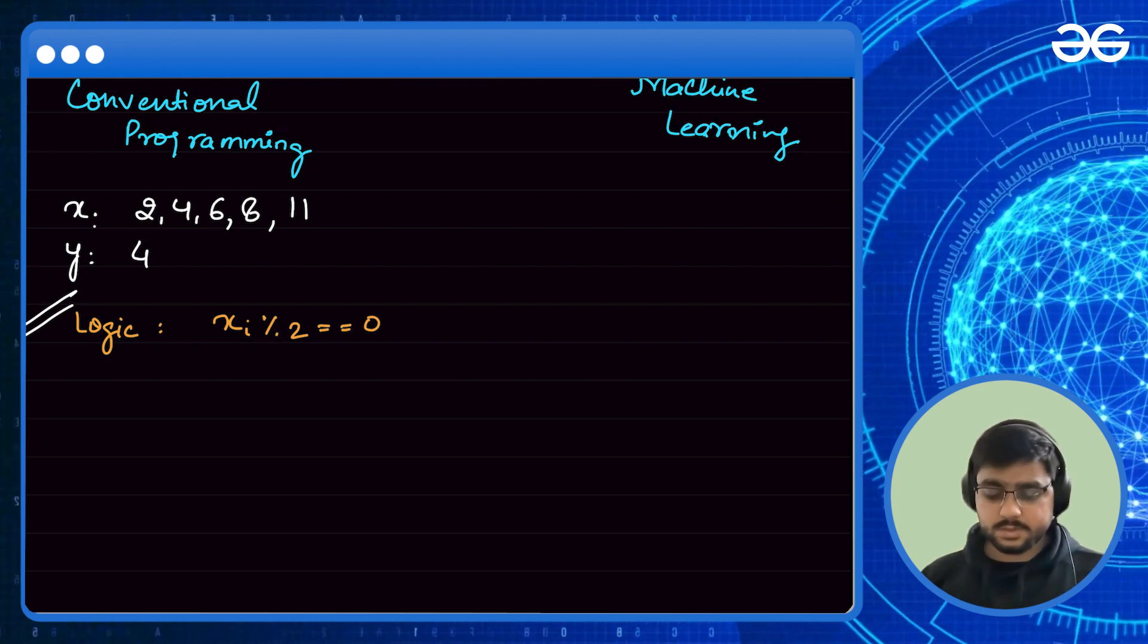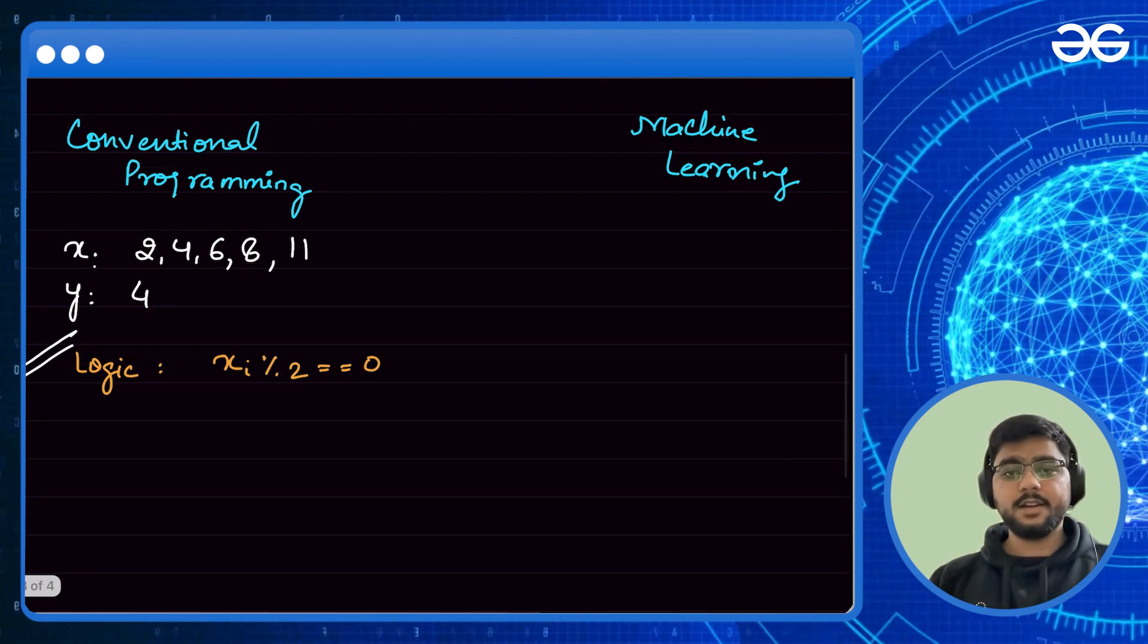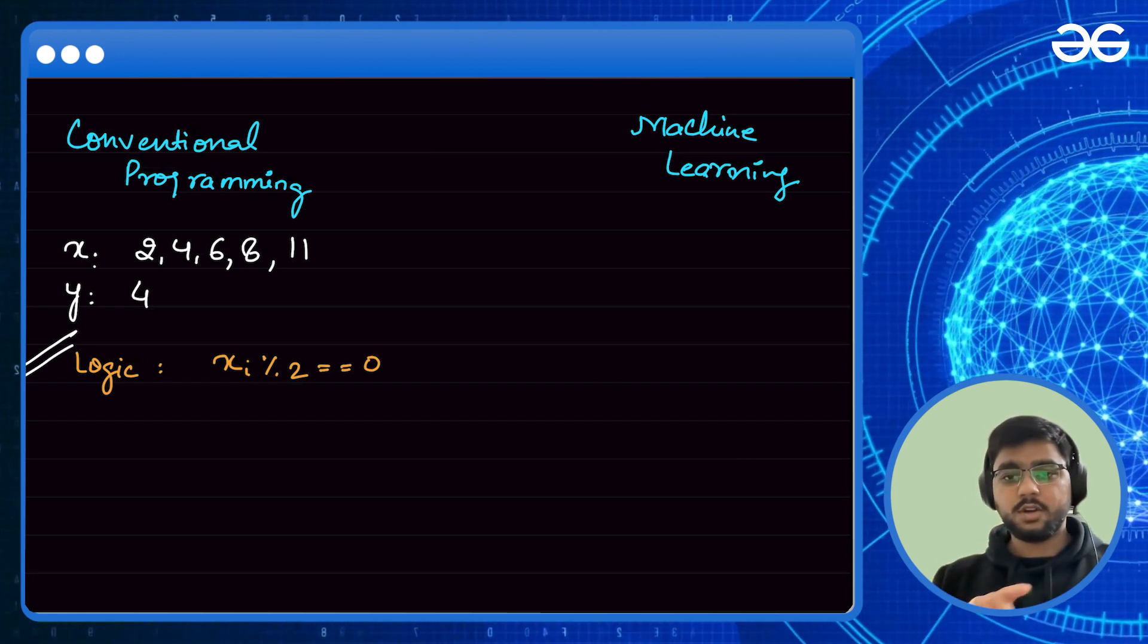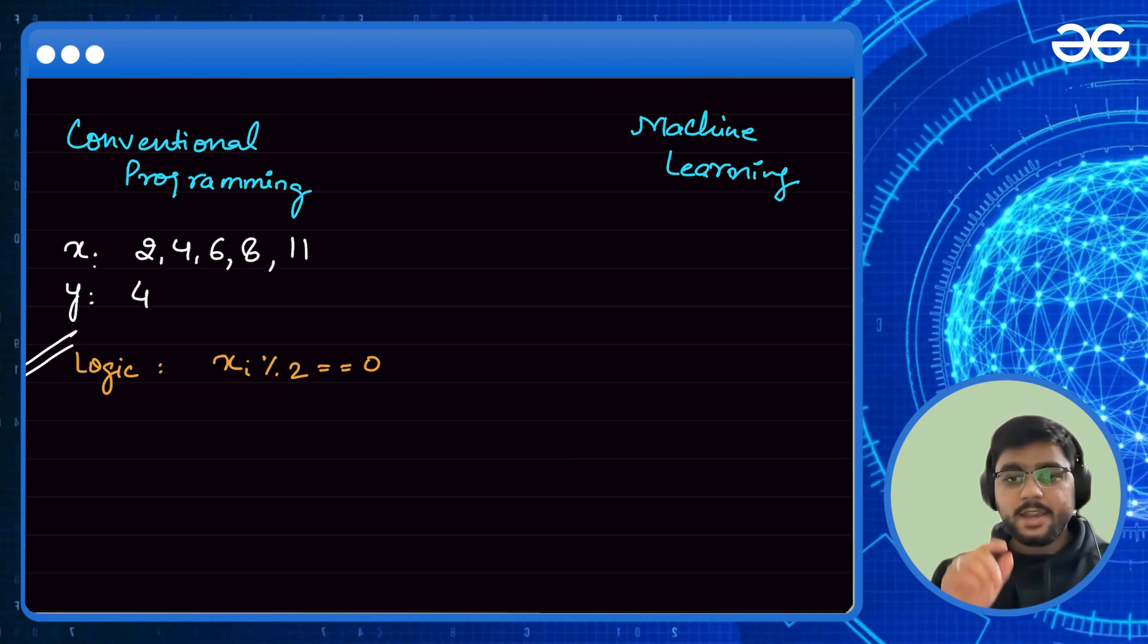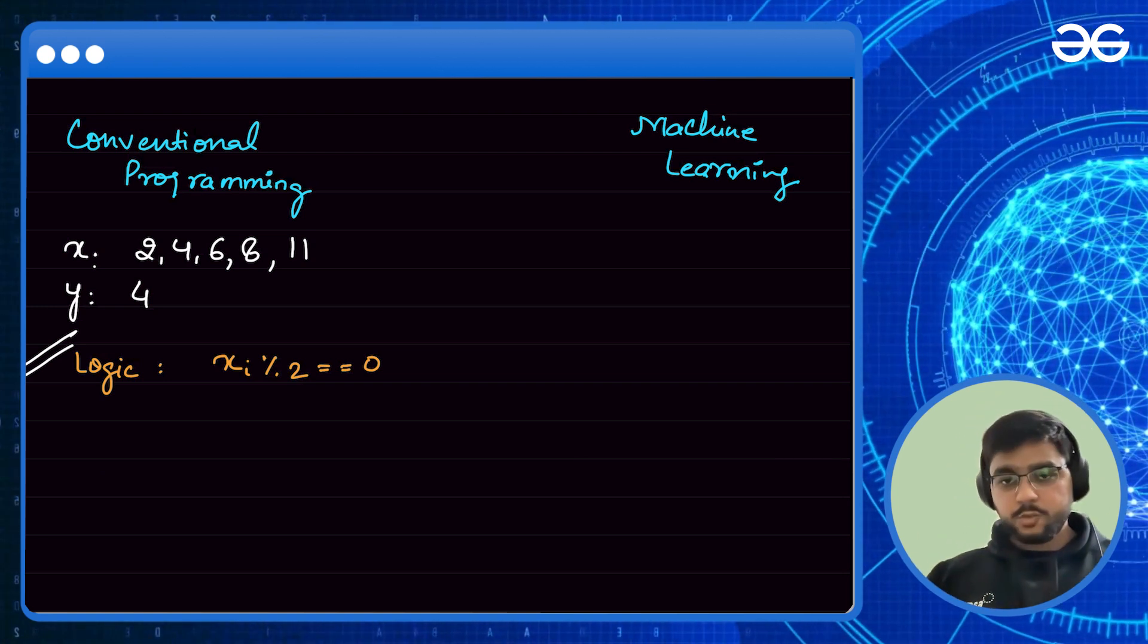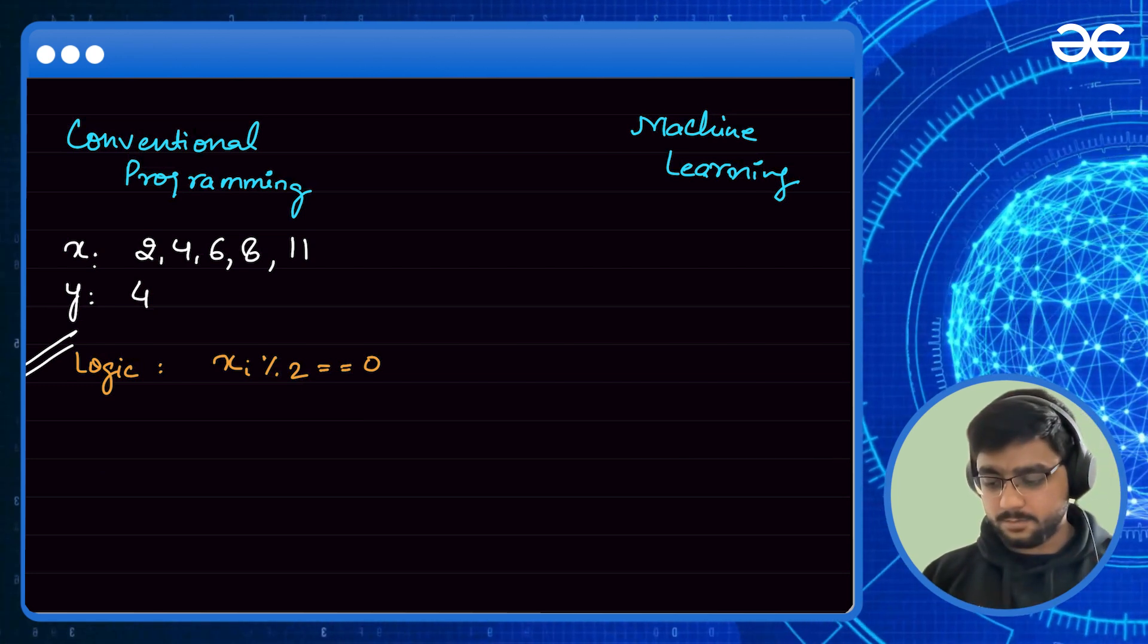Now where comes the difference? In case of machine learning, this logic is the key thing that you will not provide to your program. It is your program that will come up with that logic which will solve your problem statement. So keep stress upon it.